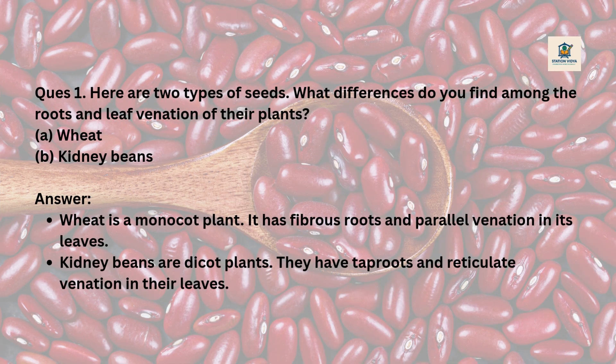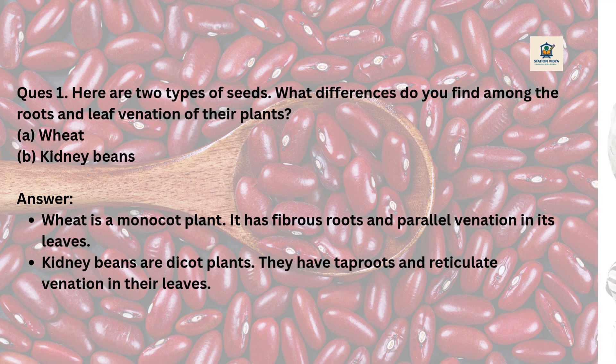Case 1: Here are two types of seeds. What differences do you find among the roots and leaf venation of their plants? A. Wheat. B. Kidney beans. Answer: Wheat is a monocot plant — it has fibrous roots and parallel venation in its leaves. Kidney beans are dicot plants — they have taproots and reticulate venation in their leaves.